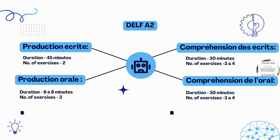In DELF A2 writing, you will be getting two exercises. There will be two informal letters — it could be sending, accepting, or declining an invitation. The word limit is 60 to 80 words. Production Orale, the speaking section, has a duration of six to eight minutes.